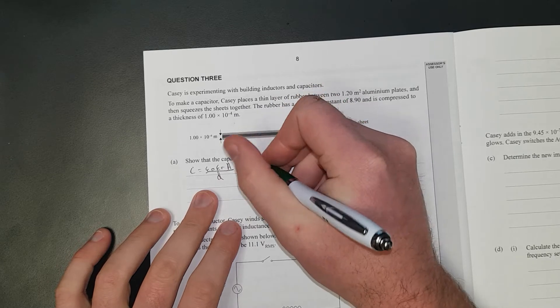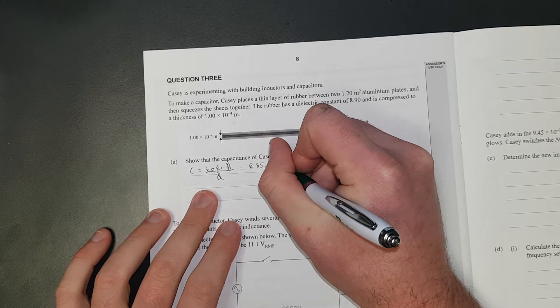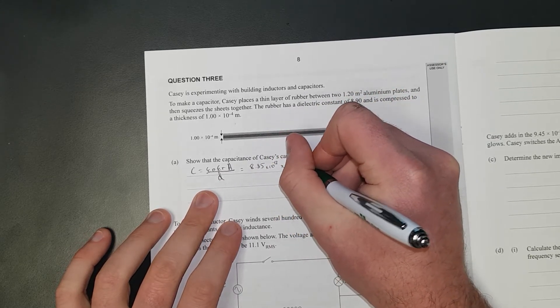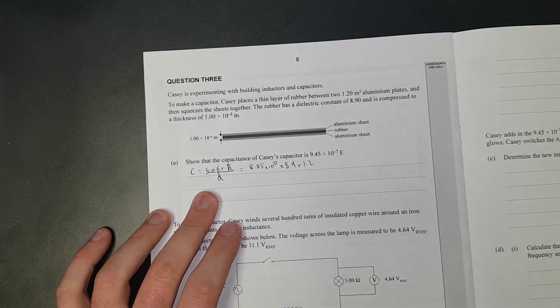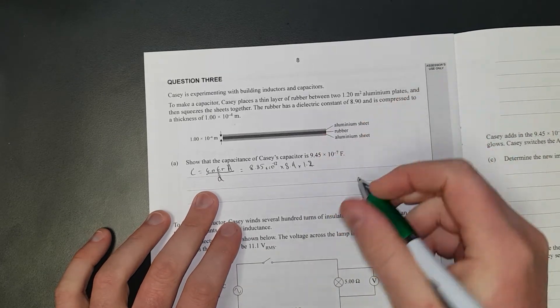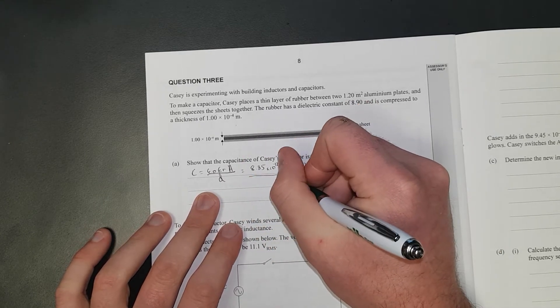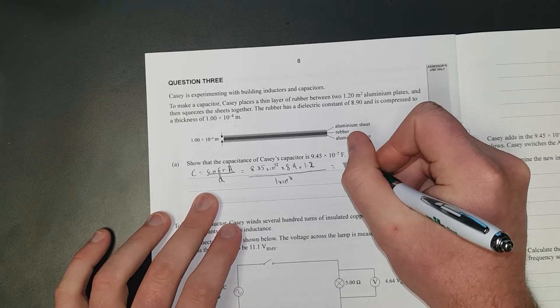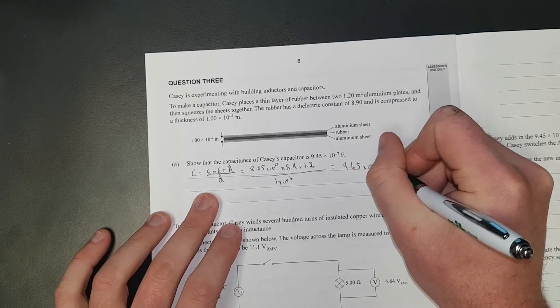That is equal to 8.85 times 10 to the negative 12 times 8.9 times the area 1.2, no fishy business, divided by 1 times 10 to the negative 4 meters. And that is going to be equal to, we'll just go 9.45 times 10 to the negative 7.